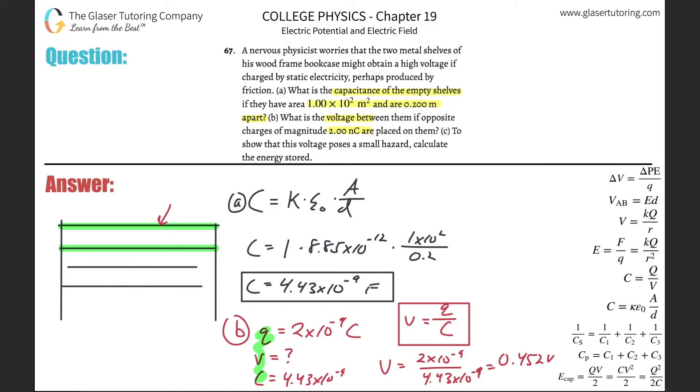We get a value of about 0.452 volts. If you think about it, you know, think about a normal 9 volt battery that you might plug into some electrical device - this is going to be like a small fraction of it, 1/18th of that basically. So it's really very very small. This physicist is way too nervous.